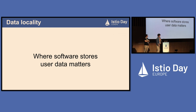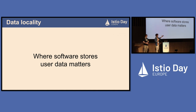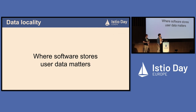Why do we care about data locality? There is legislation like GDPR and CCPA that enforces rules on data and how it is managed depending on where it is geographically. Companies we want to sell Pigment to are starting to care a lot about where their data is, and so we need to have a response to that.